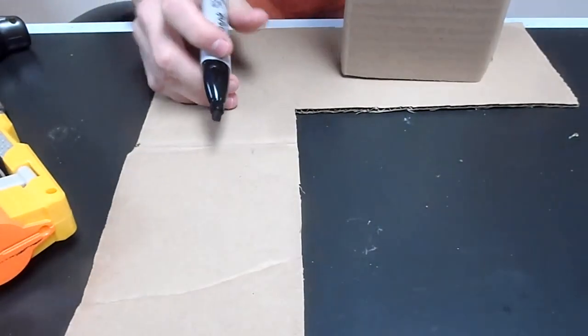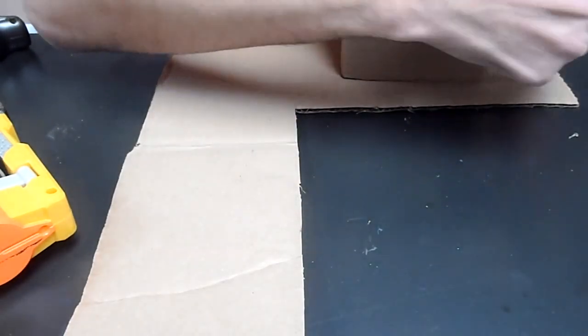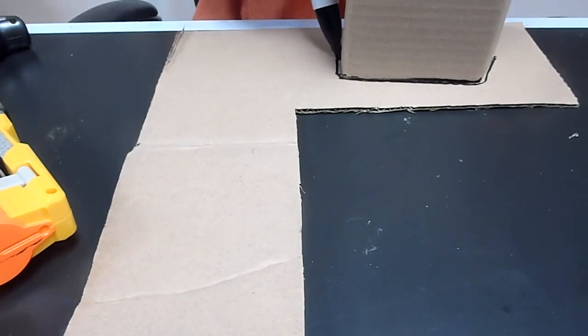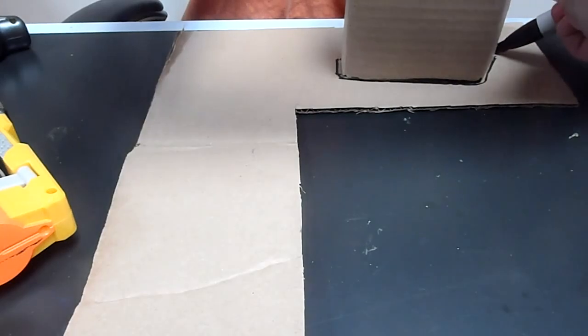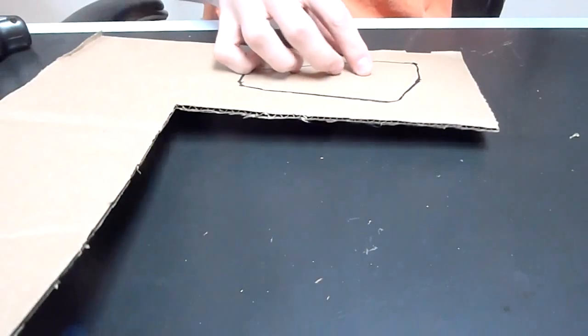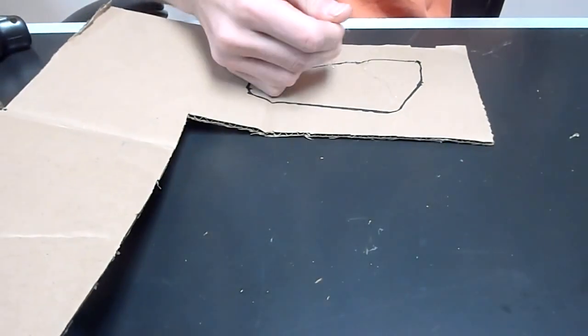To do that, you just come in and trace around the bottom of your cardboard to get the outline of whatever the bottom of your holster is.